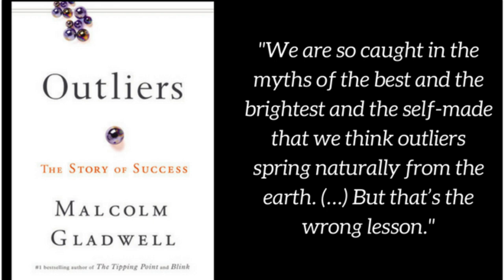Chapter 3: The Trouble with Geniuses, Part 1. In this chapter, Malcolm Gladwell delves into the relationship between intelligence and success, challenging the conventional belief that high IQ alone guarantees exceptional achievements. He introduces readers to the story of Christopher Langan, a man with an extraordinary IQ estimated to be around 195 — higher than that of Albert Einstein. Despite his exceptional cognitive abilities, Langan's life did not unfold as one might expect, and he faced significant challenges in realizing his full potential.